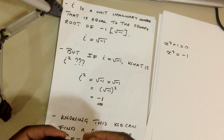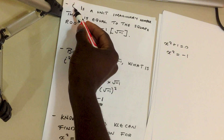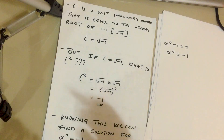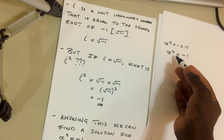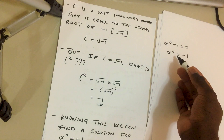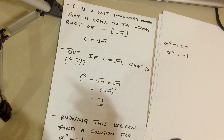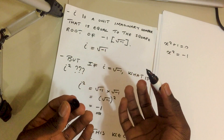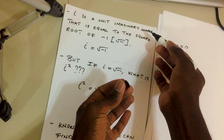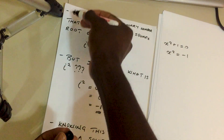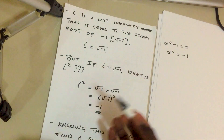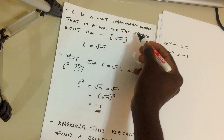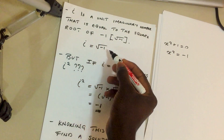A unit imaginary number is just the letter i. Back in the 18th century, mathematicians realized that there were no solutions to such quadratic functions or equations, so they had to come up with an imaginary number system, which is called the complex number system. A unit imaginary number is i, and i is equal to the square root of negative one.